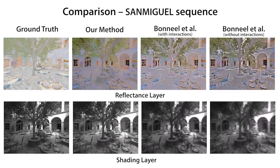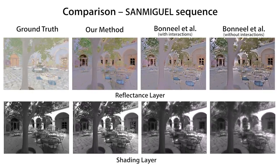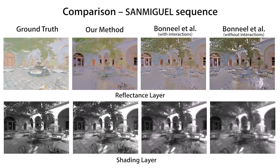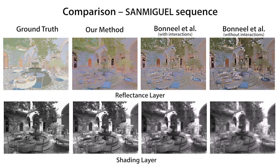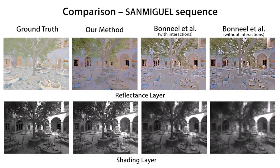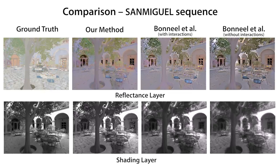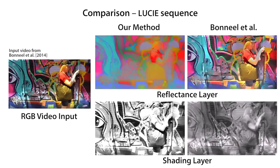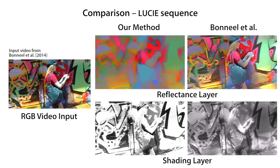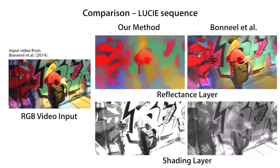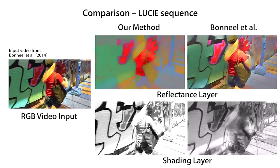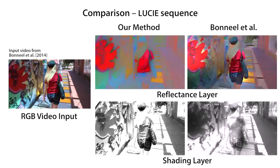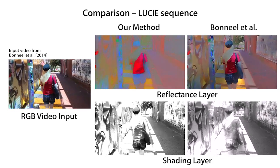Our method also works well for outdoor scenes such as this synthetic sequence. Here we compare to the ground truth decomposition on the left. Our decomposition better handles the tree and the wall in the background. No current approach, including ours, is able to disambiguate the colored lighting from the reflections layer for complex scenes such as this. Note that we still obtain more plausible results at ten times faster frame rate.